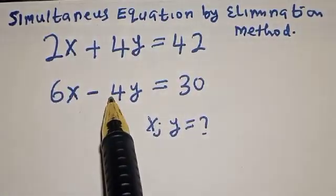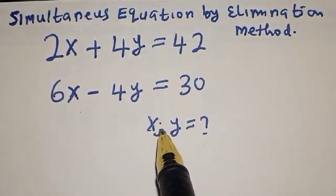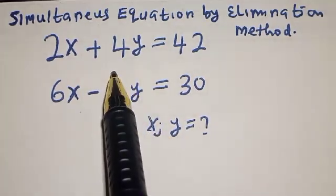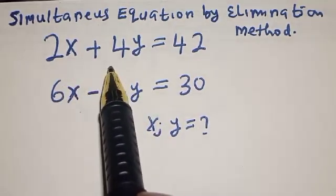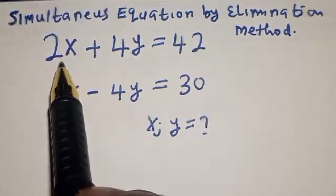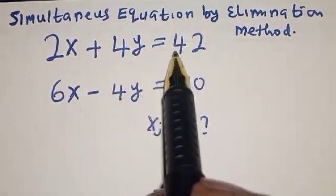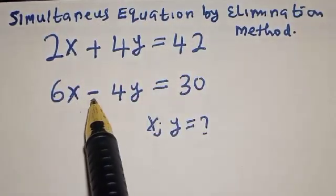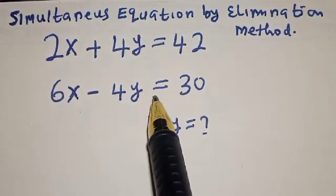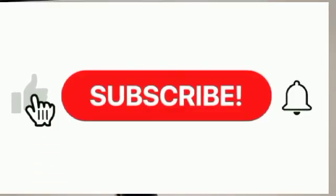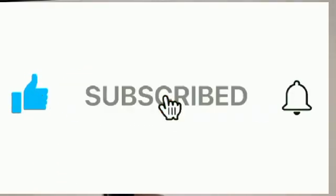Welcome to Math Gist. In this class, we want to find the value of x and y from this simultaneous equation using elimination method. 2x plus 4y equals 42, 6x minus 4y equals 30. Like, share, comment, and subscribe.